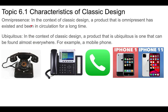Omnipresence, in the context of classic design, refers to a product that has existed and been in circulation for a long time. Ubiquitous refers to a product that can be found almost everywhere. The telephone is a great example — telephones have been around for well over 100 years. When they began to take on a classic form, the telephone logo became iconic; we still use that handset icon on cell phones today.